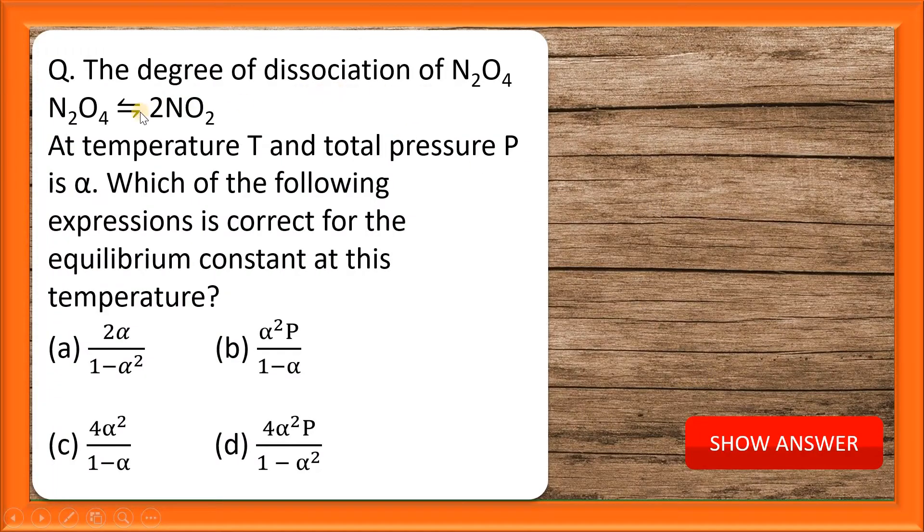The degree of dissociation of N2O4 is given. N2O4 dissociates to give 2NO2 at temperature T, and the total pressure is P at equilibrium, with degree of dissociation alpha. Which of the following expressions is correct for the equilibrium constant at this temperature?